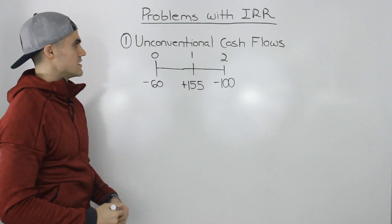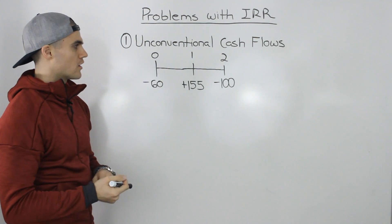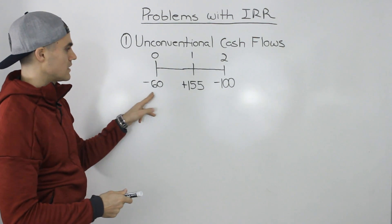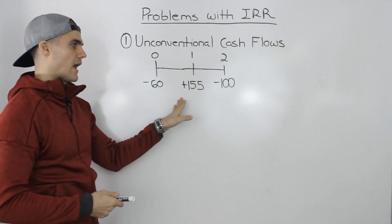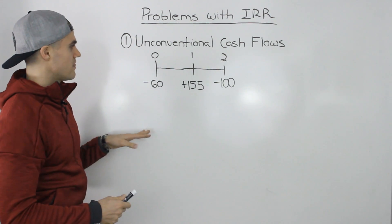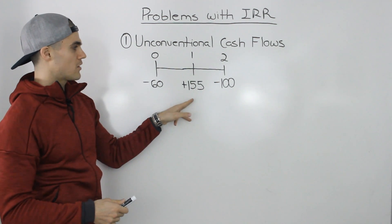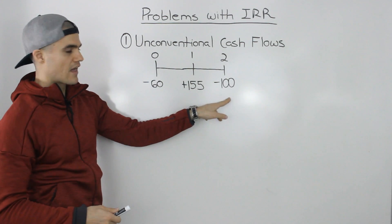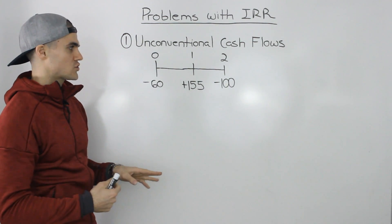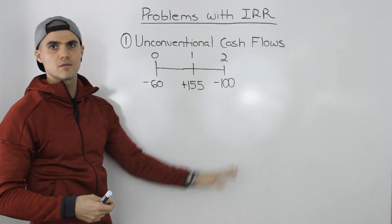The first problem that can arise is a project having unconventional cash flows. So far the projects we've been dealing with have had conventional cash flows, meaning there's a negative cash flow at time zero and then the rest of the cash flows throughout the life of the project are positive. But in this case the cash flows throughout the life of the project are a mix of positive and negative — that's what we mean by unconventional.